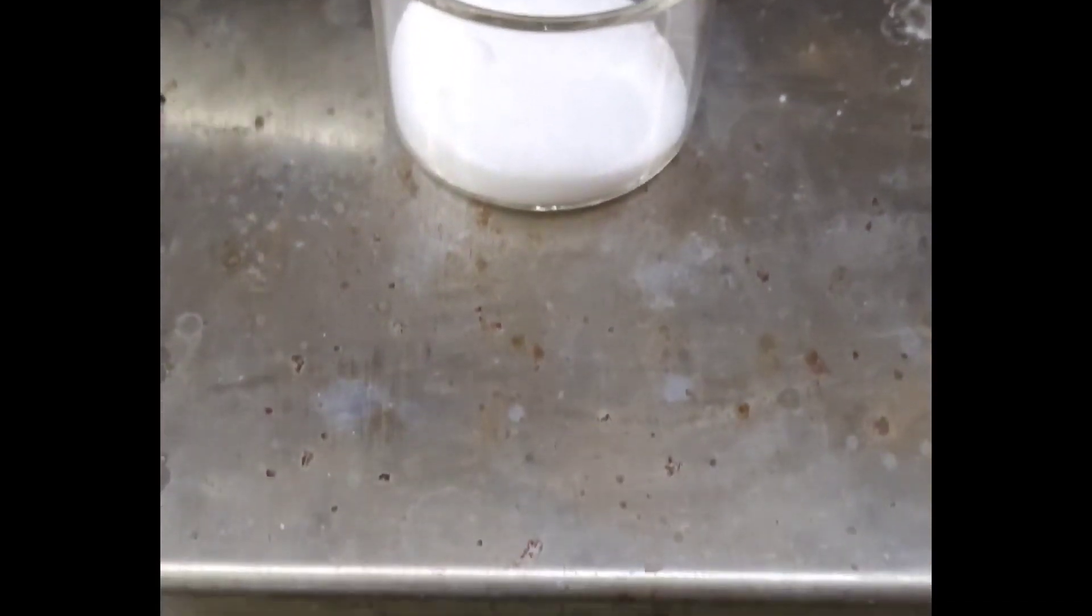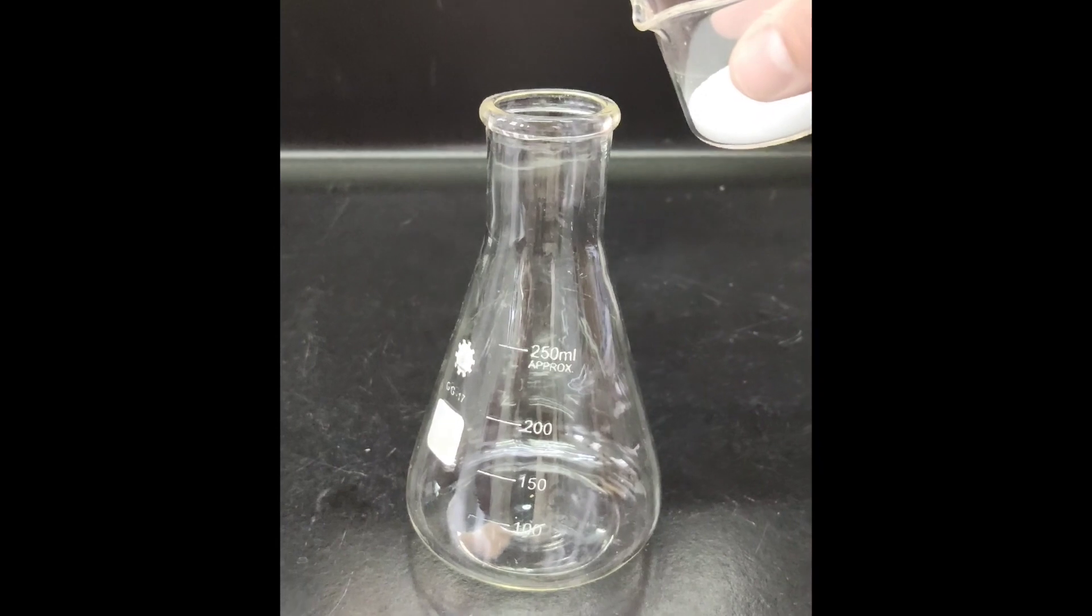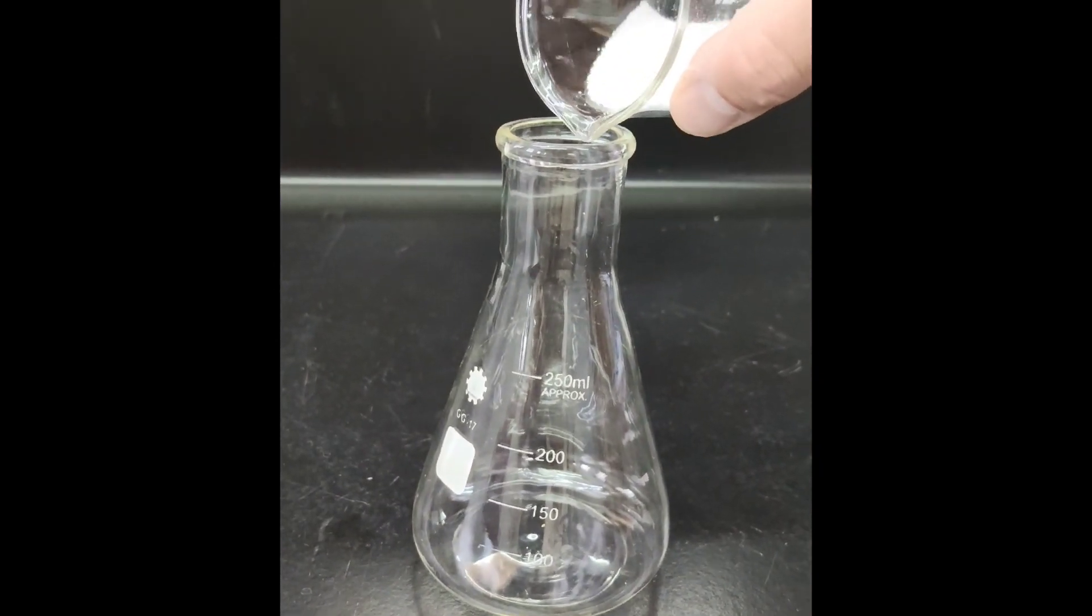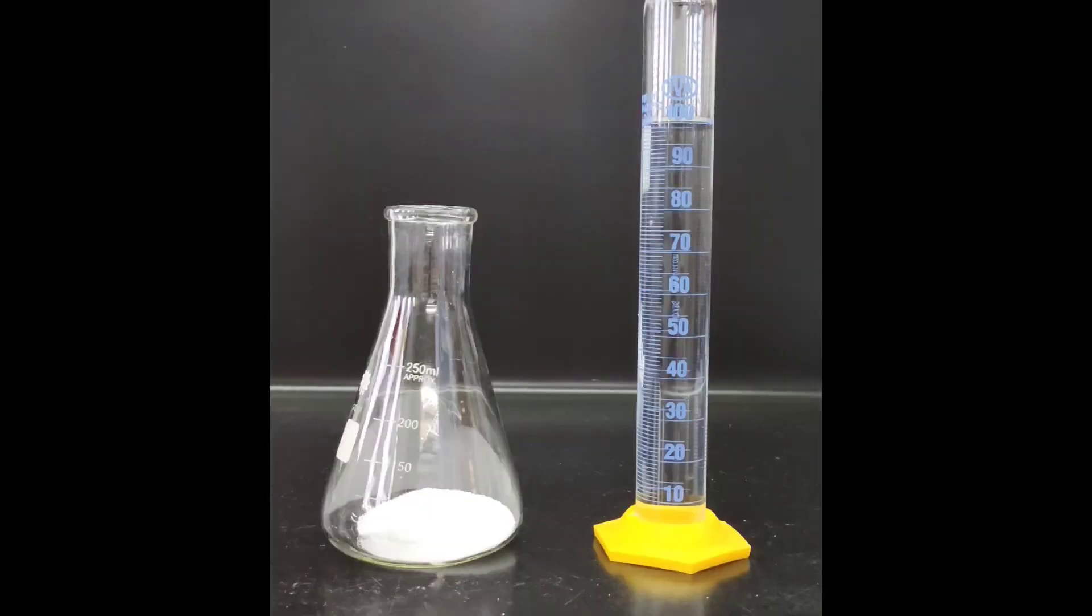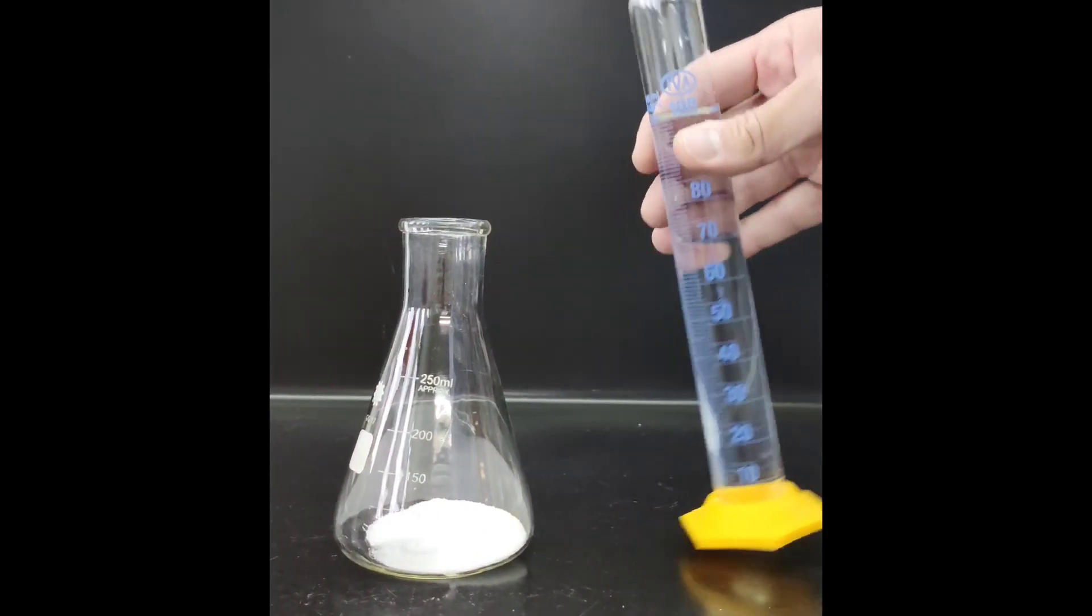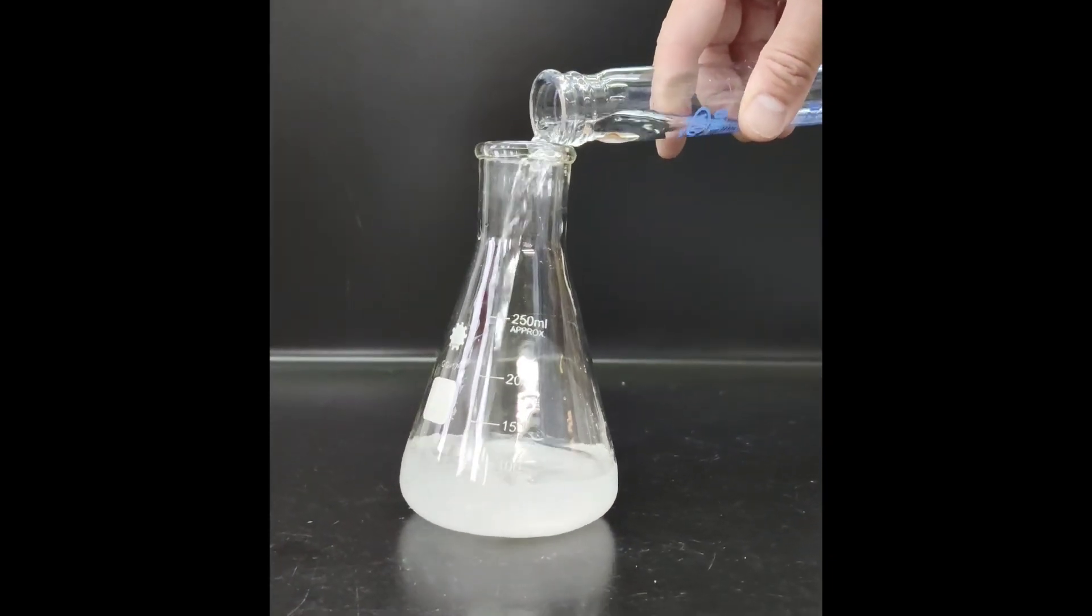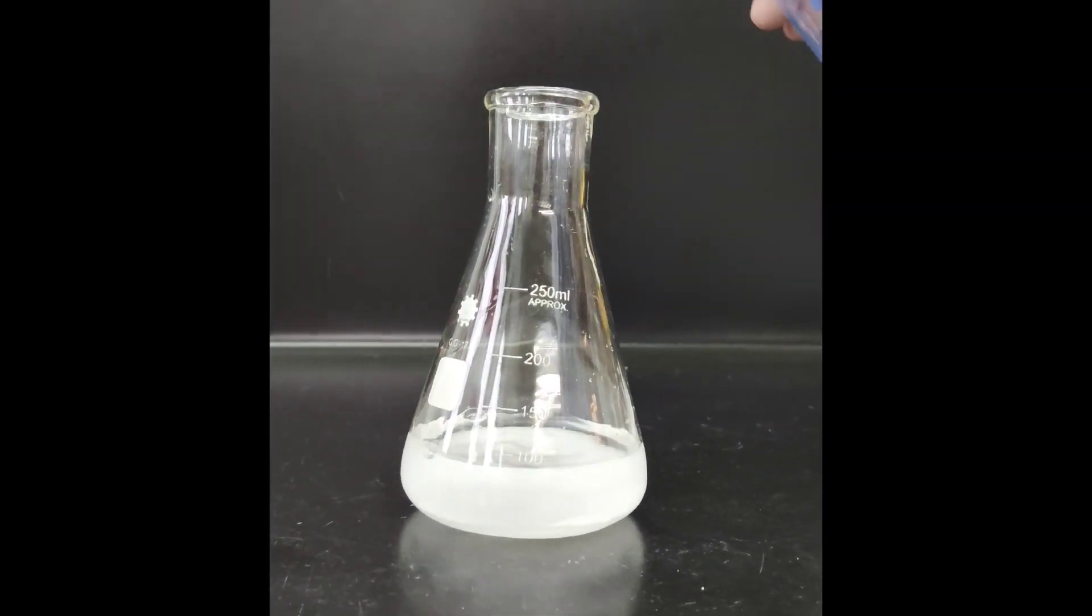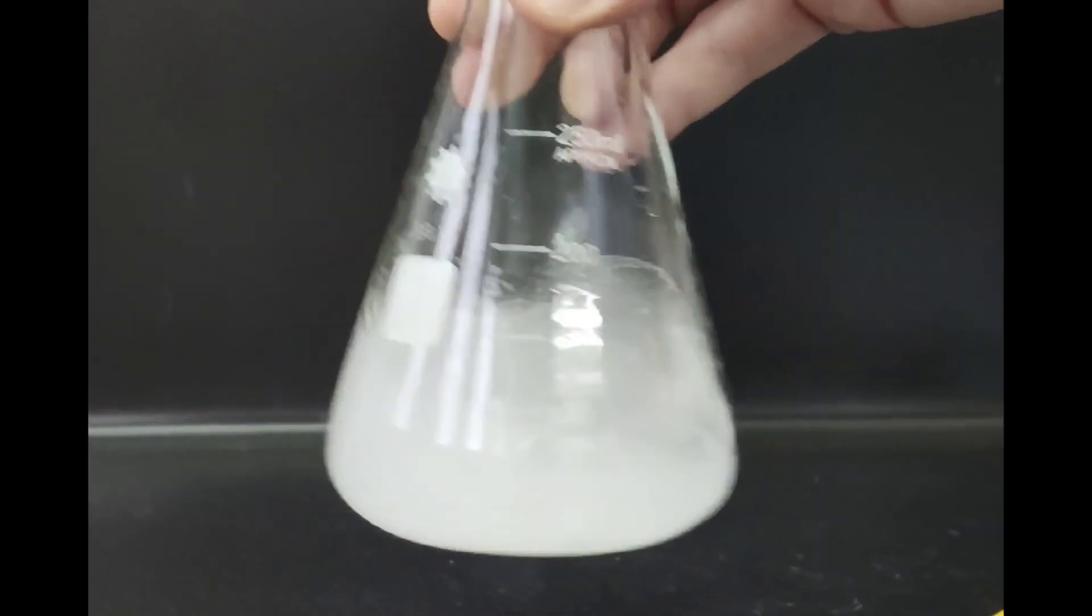While the reaction continues we weigh 20 grams of sodium chloride. We add the sodium chloride to a flask and then pour 100 ml of distilled water. We mix it thoroughly and then put it in the freezer for the remaining time of the reaction.